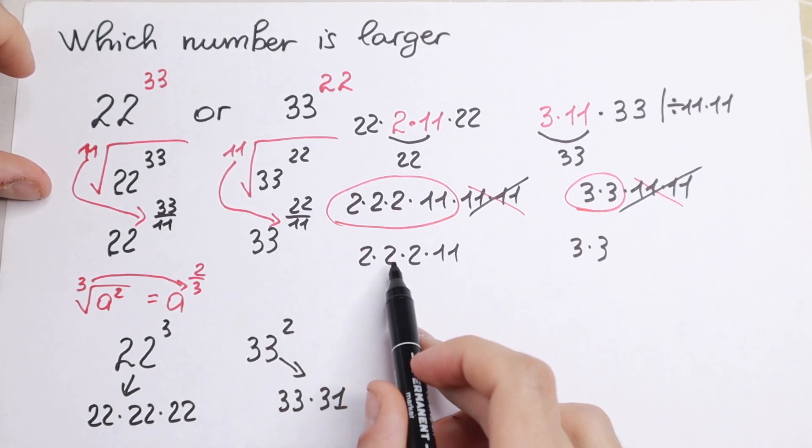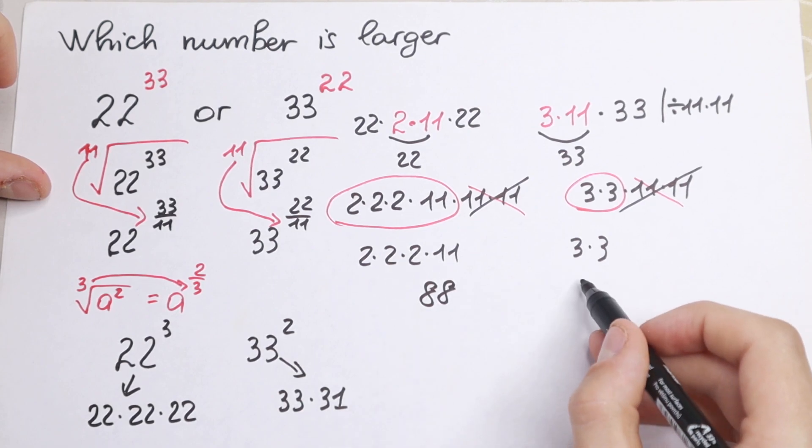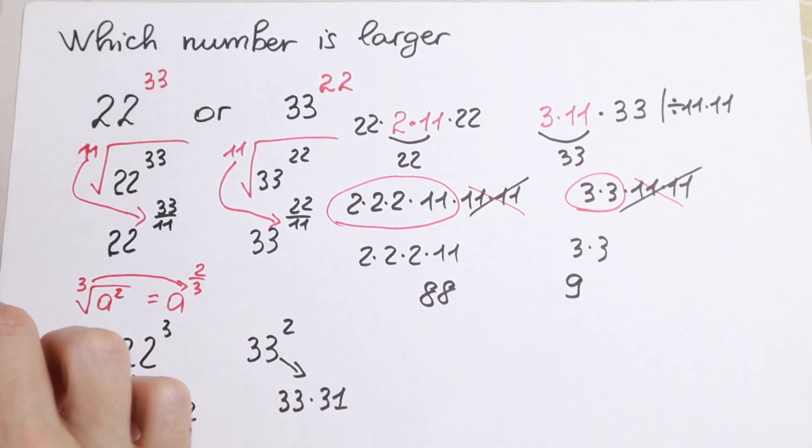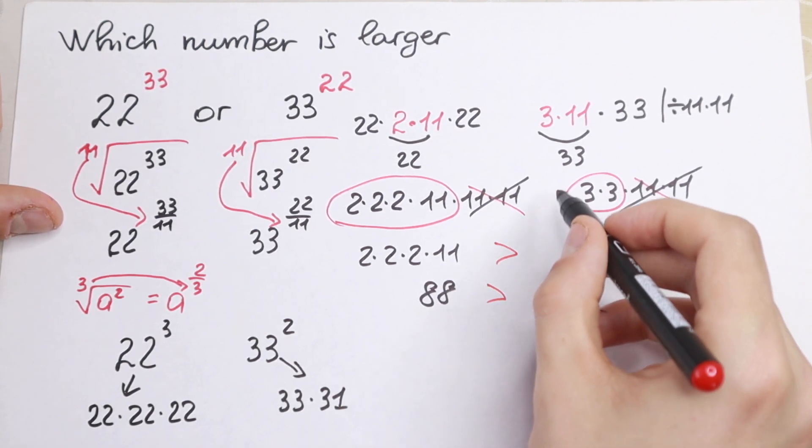2 times 2 is 4, 4 times 2 is 8, 8 times 11 we will have 88. And on the right hand side we will have 9. So nothing hard to say that left hand side will be greater than right hand side.